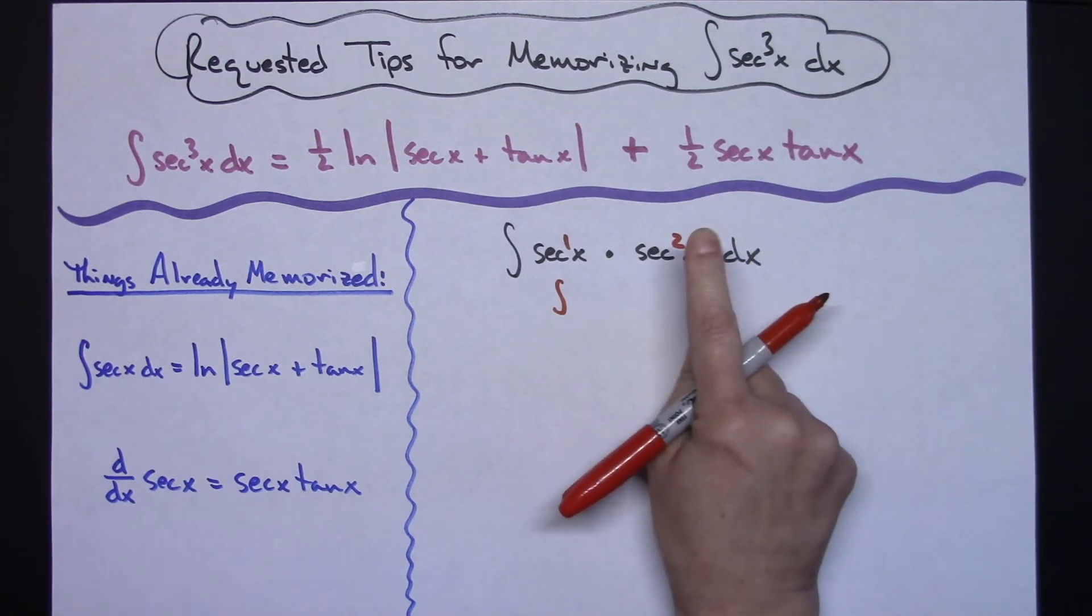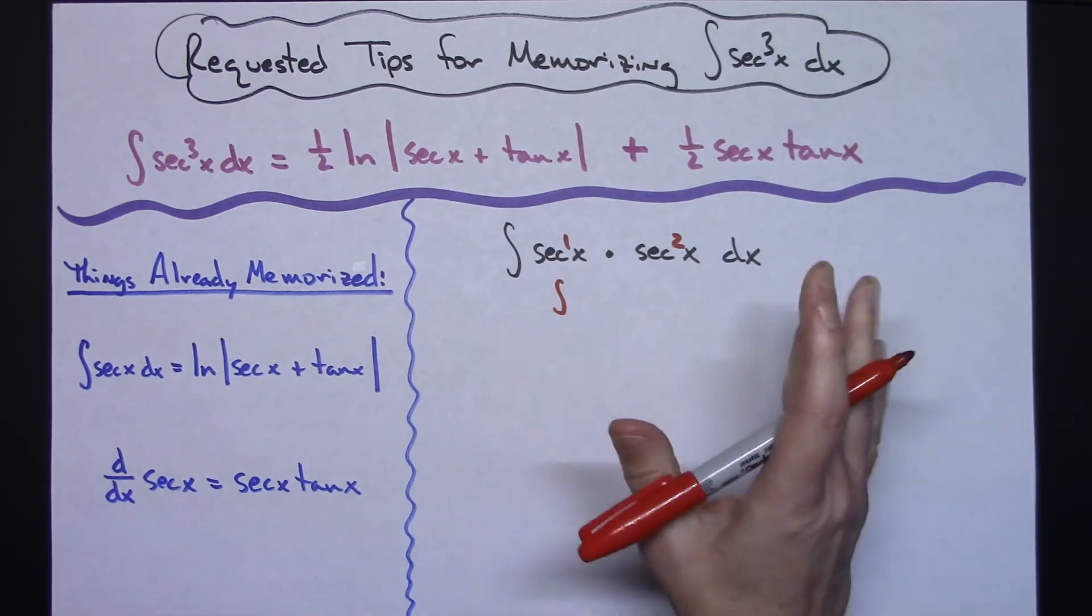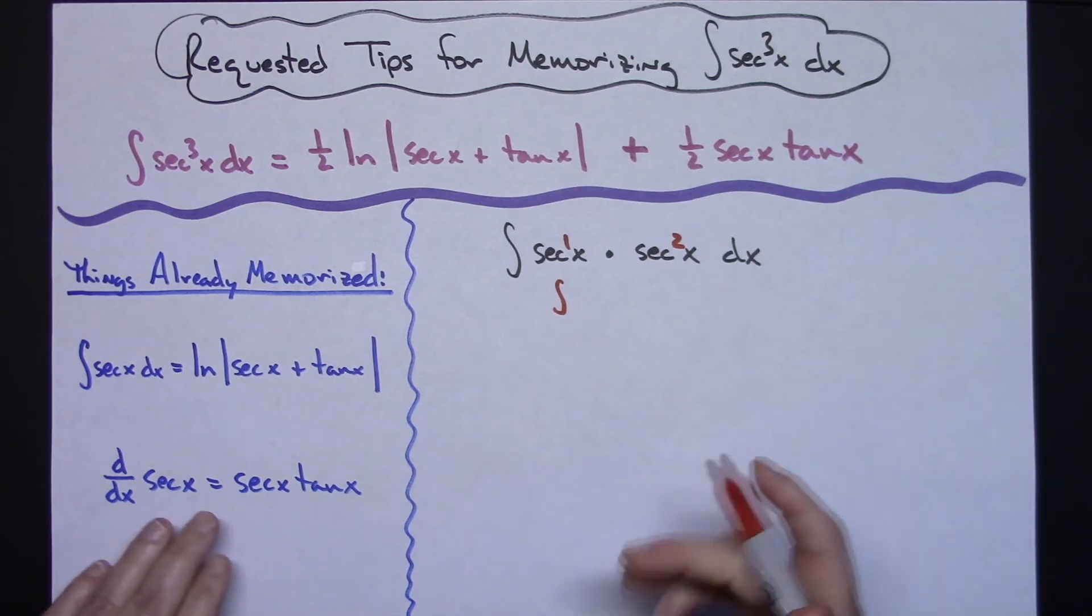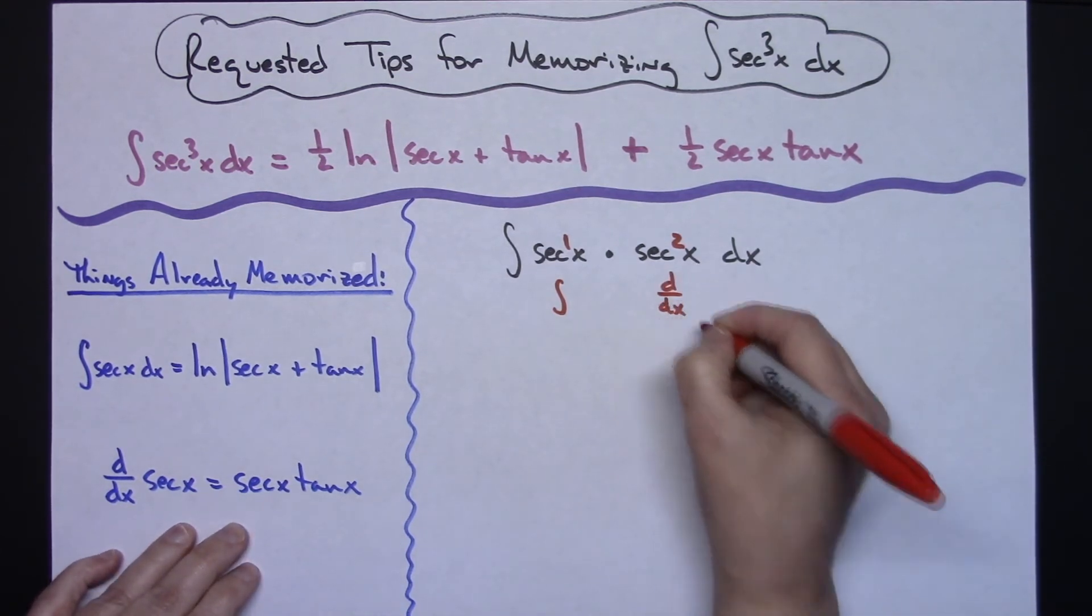And I'm not going to think derivative of secant squared x. I'm just going to think I've got another secant and I'm going to take the derivative of it, so maybe kind of think derivative here.